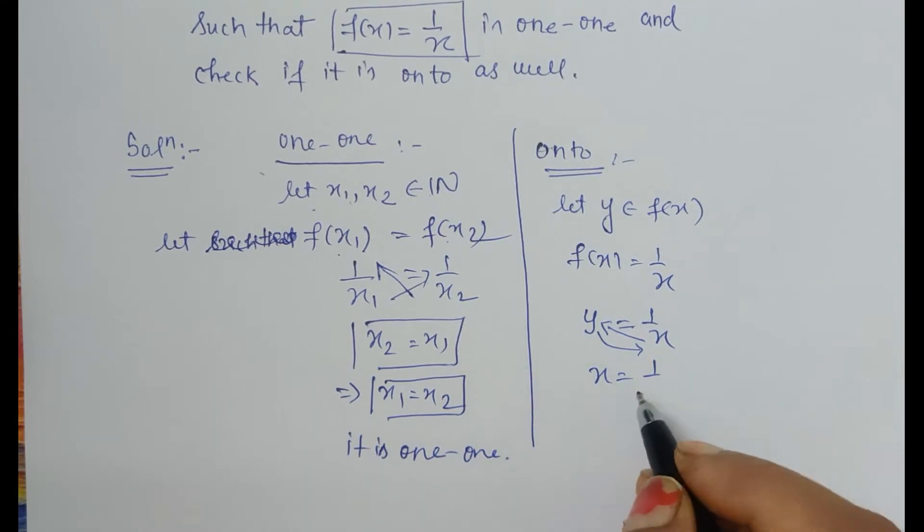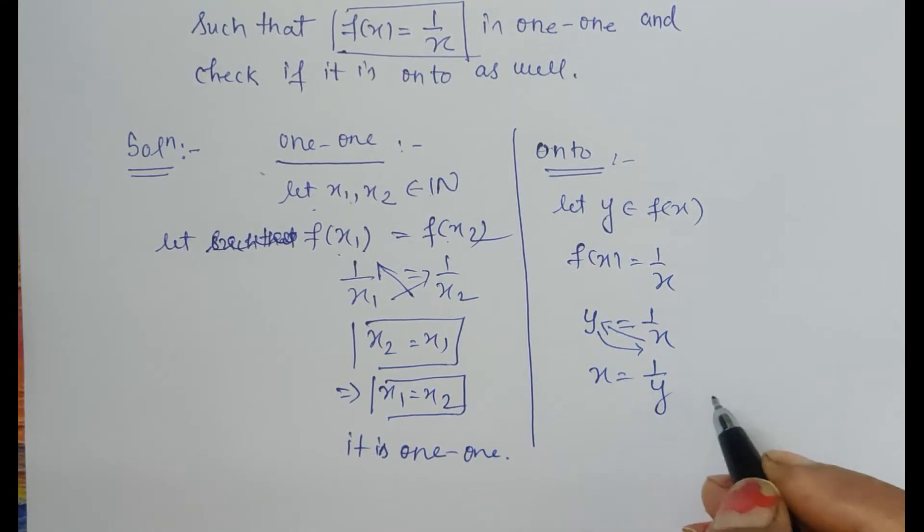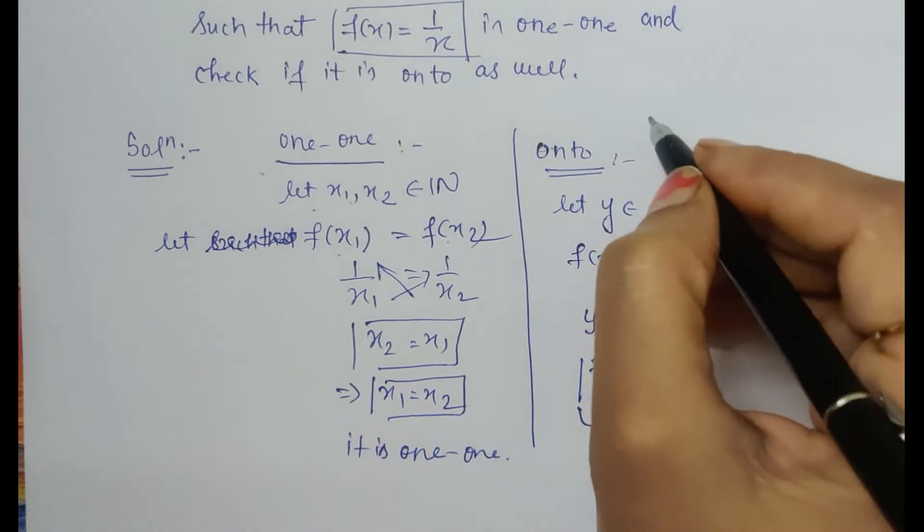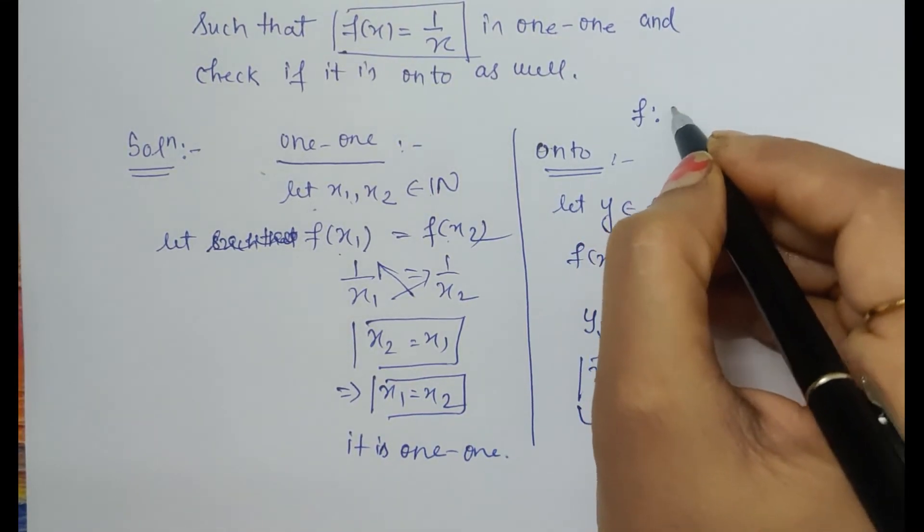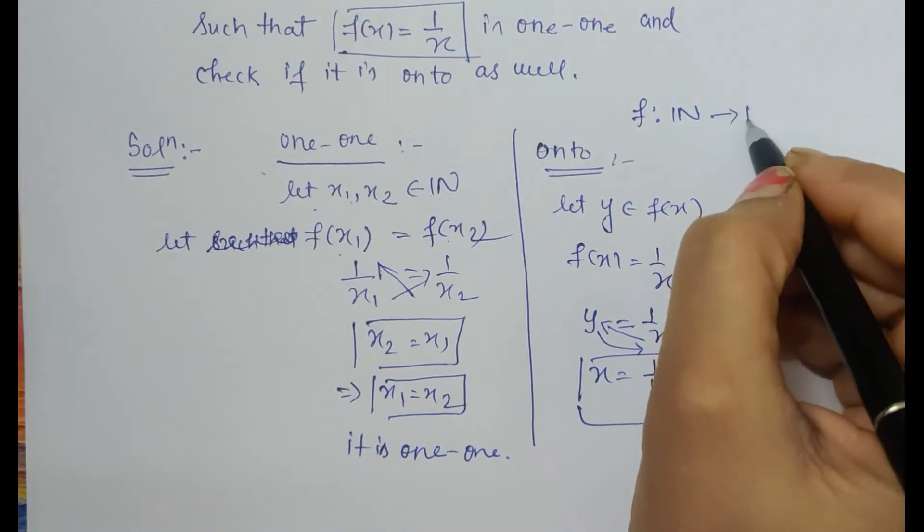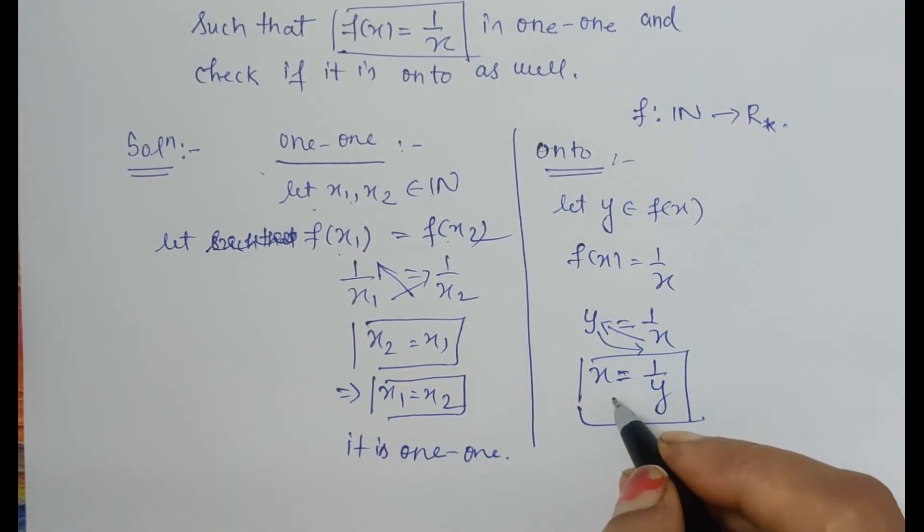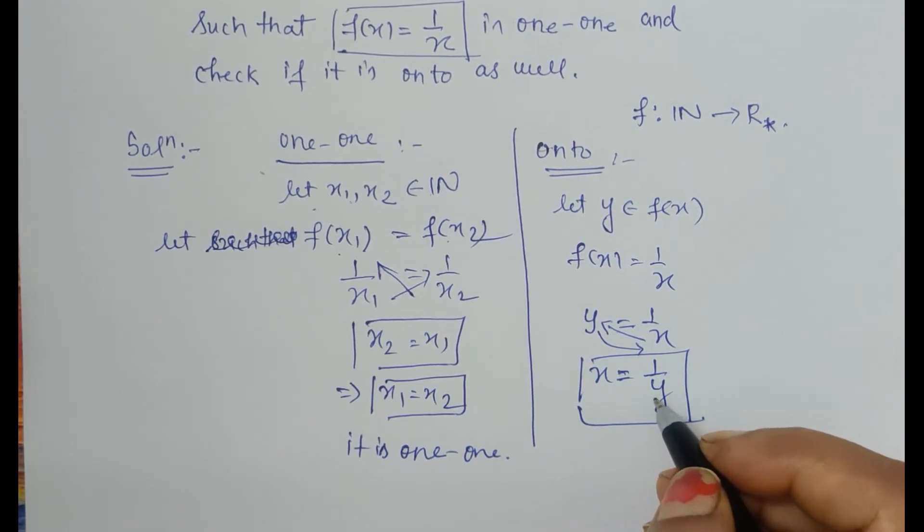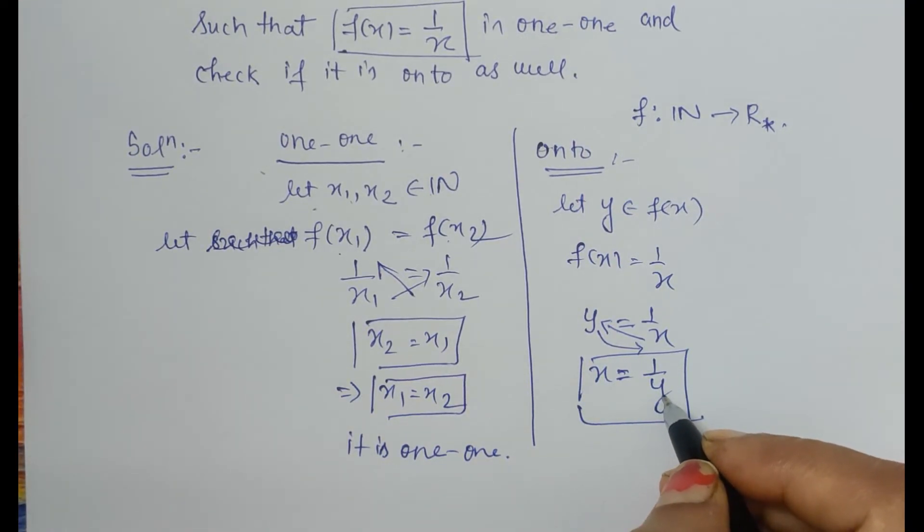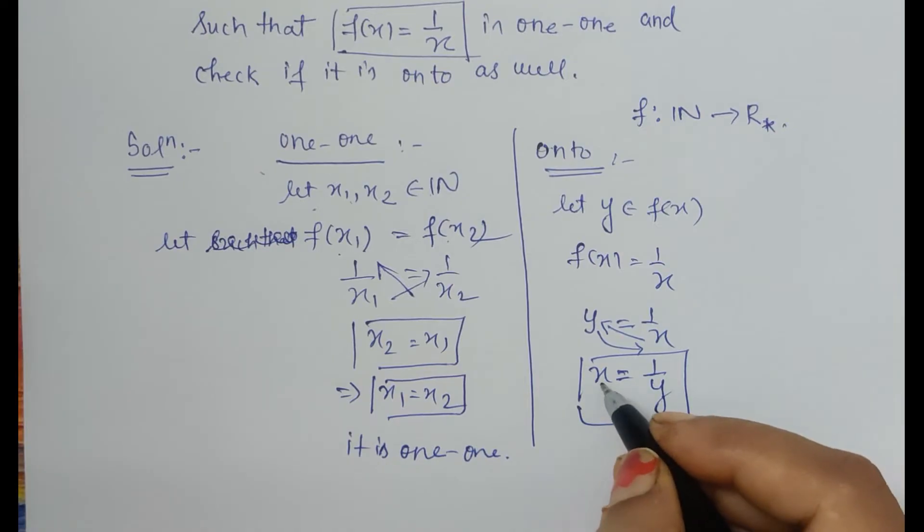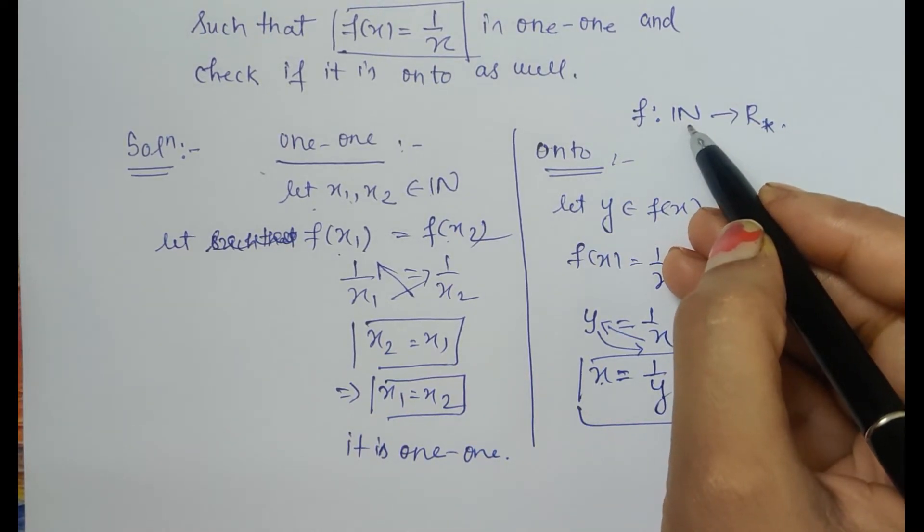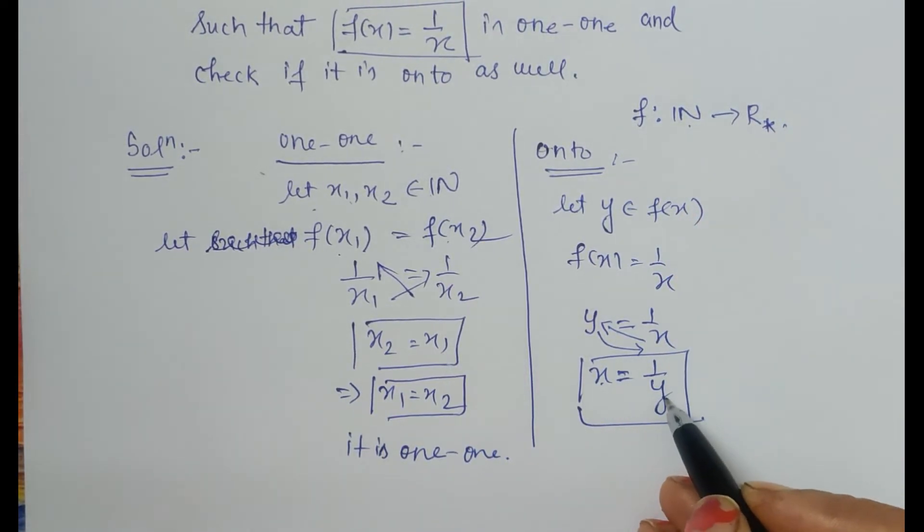Now at this step we have to check the definition of the function. f is from the set of all natural numbers to the set of all positive real numbers. So here we have to check: is this result true? That for each and every element of the codomain, I will always get a domain element that belongs to the set of natural numbers.